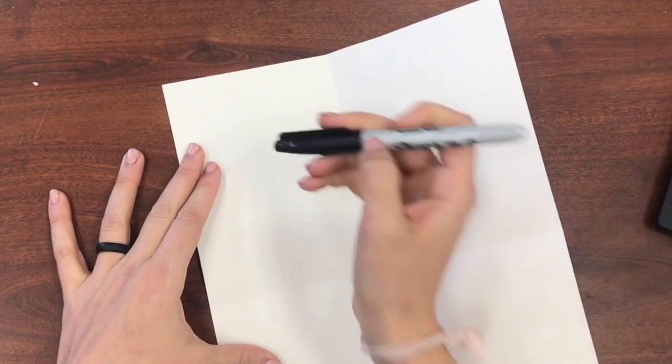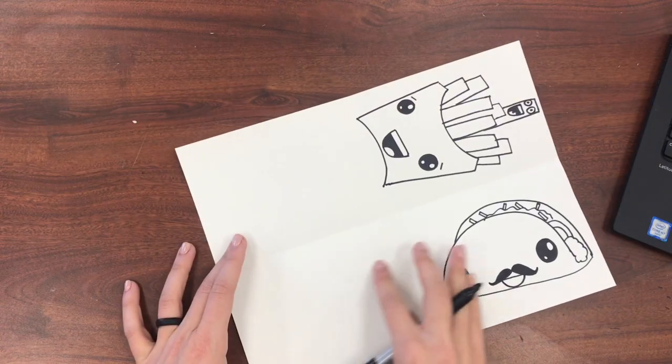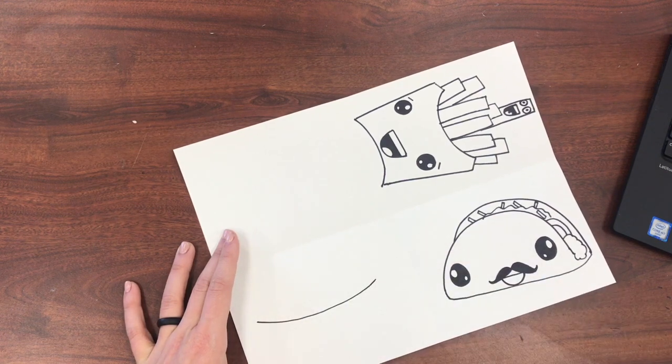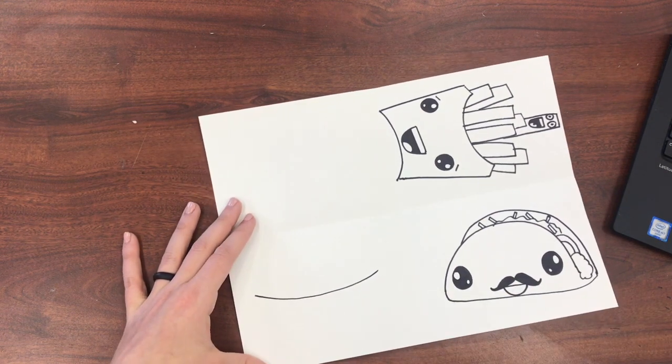You're going to be using a pencil, but I'm going to be using a sharpie for the demonstration. We're going to start with a very long smiley face shape. This is for the top of our bun.